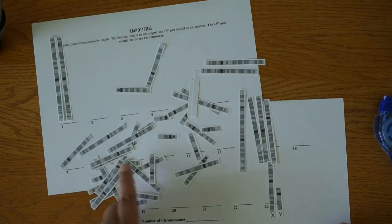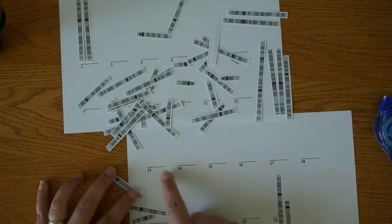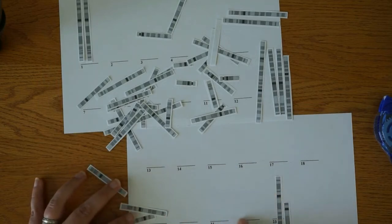But all of the other chromosomes should fit in the spaces. So you are organizing from tallest to shortest all the way down through all the spaces and all the banding patterns should match up. So you should have a pair for each slot.